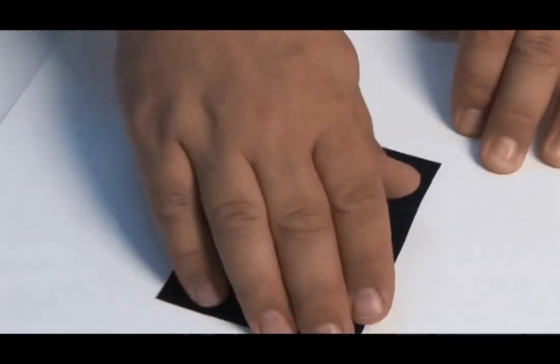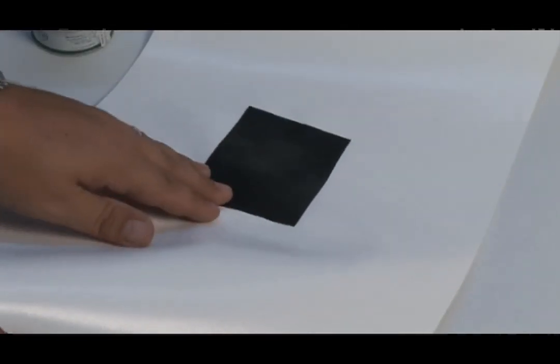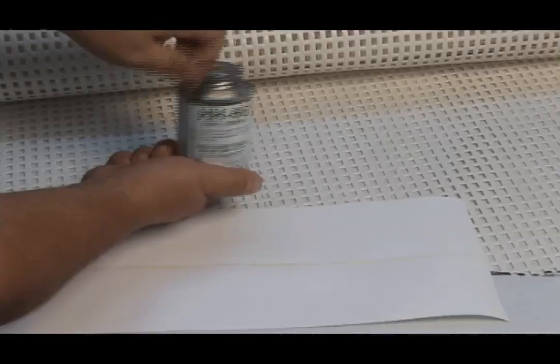So we're obviously using black on white so that you can see what we're doing here. Here's what it looks like when it's cured completely - a nice solid patch, vinyl to vinyl only.